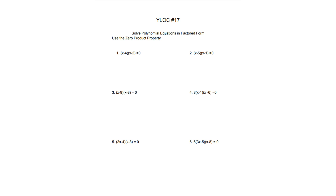The zero product property basically means that if you're multiplying two things, like a and b, and if this is equal to zero, then either a equals zero or b equals zero. So we can use this for number 1, where we're multiplying (x minus 4) and (x minus 2). Using the zero product property, either x minus 4 equals zero or x minus 2 equals zero.